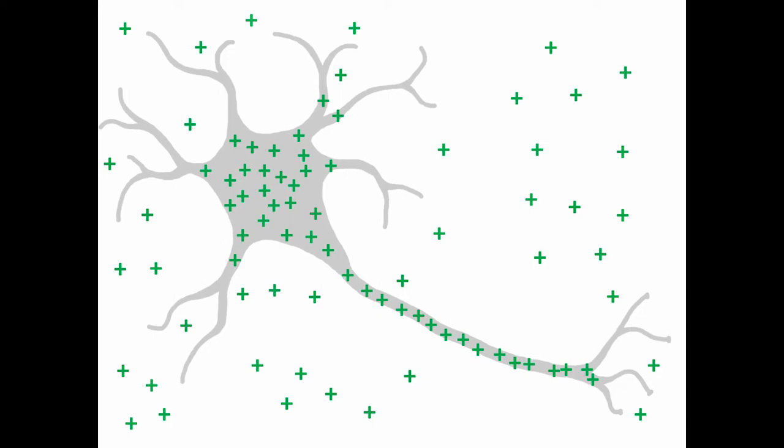Another way to think about this is to pretend that you're throwing a party and you invite a few friends over. Once your friends arrive, they're having such a great time that they call more friends to come over. Now your house is packed with people, similar to the neuron, which is packed with positive charges.